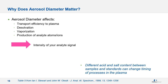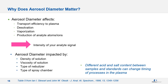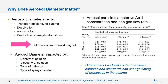Aerosol diameter affects transport efficiency to the plasma, rate of desolvation and vaporization, and ultimately the production of analyte ions and signal intensity. Aerosol diameter depends not only on density and viscosity but also on the type of nebulizer and spray chamber. Between deionized water and a solution containing 25% nitric acid, the particle mean diameter entering the plasma changes by nearly one micron. This can have a huge effect on what happens to particles in the plasma, and changing the nebulizer gas flow setting can also affect the aerosol and analytical signals.